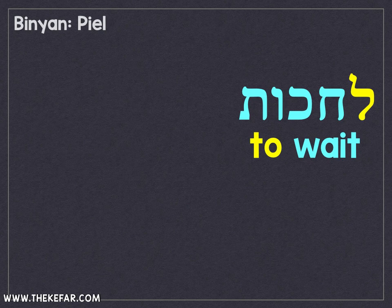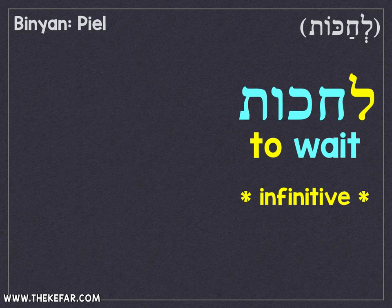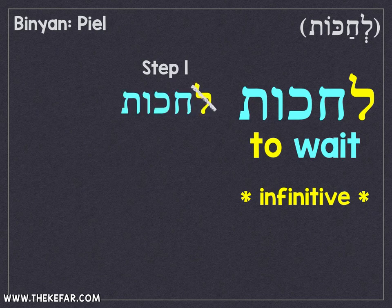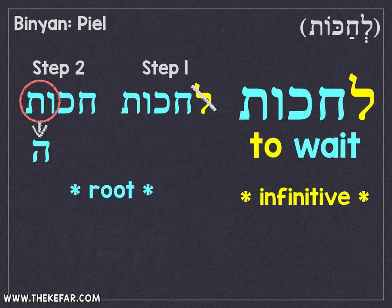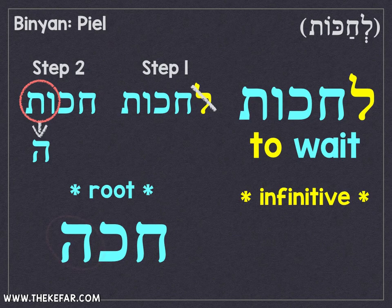We're going to use the verb L'Chakot, which means to wait — as in, 'I don't want to wait for you.' The first step is to get rid of the initial Lamed. The second step: since it ends in a Vav-Tav, we convert that Vav-Tav to a Hei. That gives us a root of Chika — Chet, Yod, Hei. This is a Vav-Tav verb.